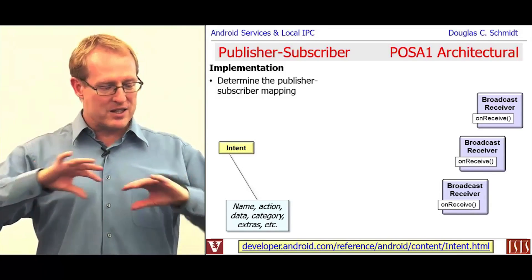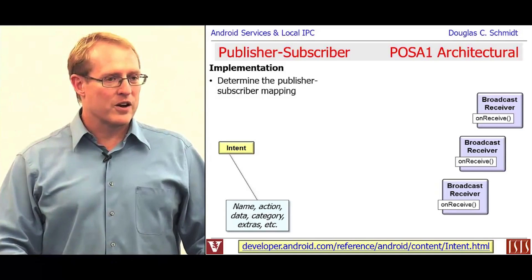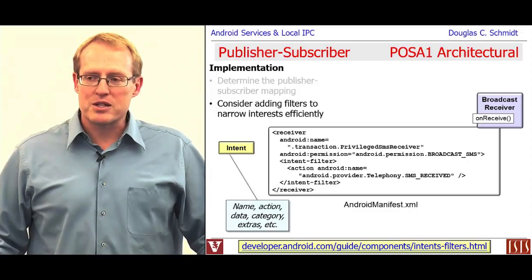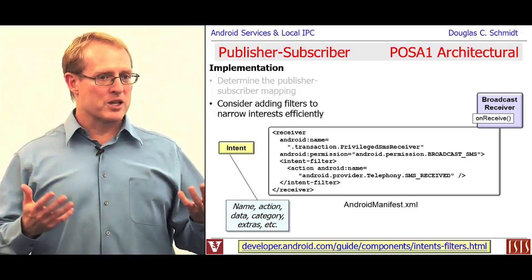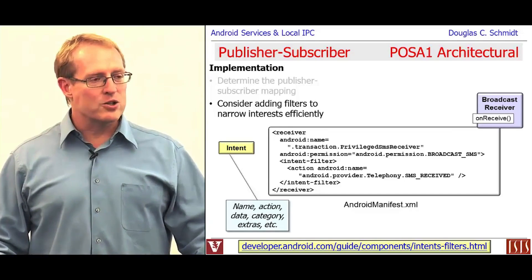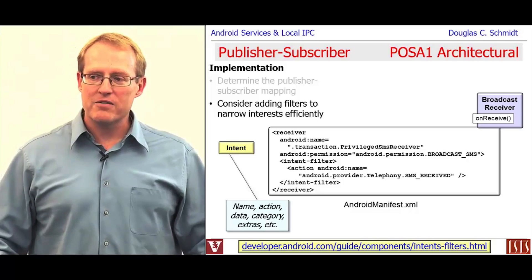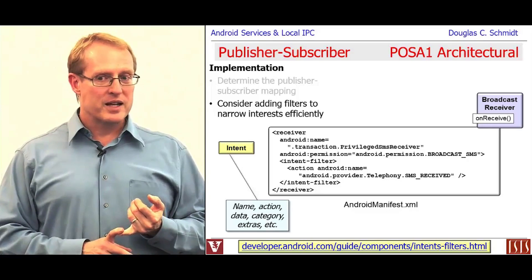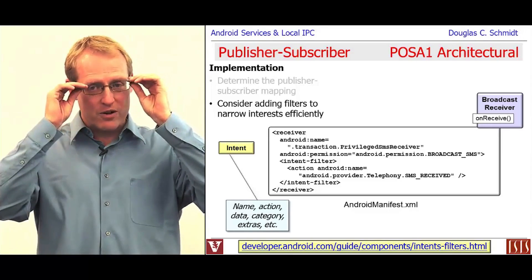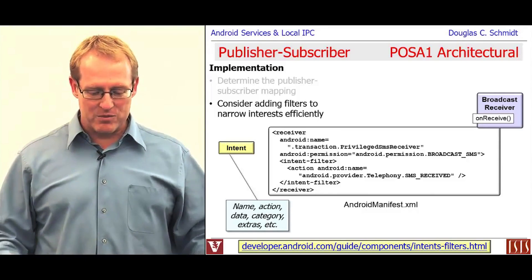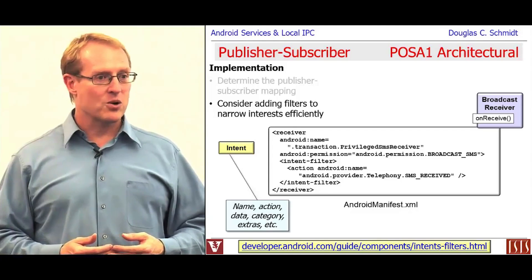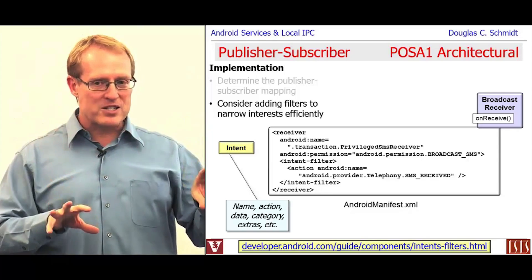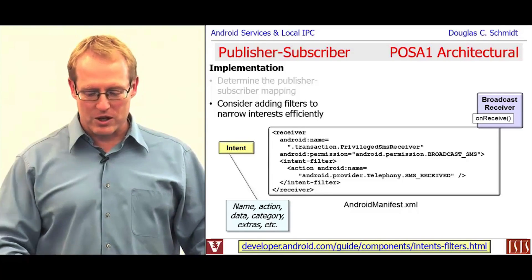That information will get distributed by some magic cloud-like thing to the various receivers. If you want to avoid the overhead of giving everybody everything all the time, you need to come up with some kind of filtering mechanism to narrow people's interests in certain topics. In Android, this is done by the concept of intent filters. It's kind of like a sieve — only things that pass through the filter are actually delivered to the broadcast receivers.